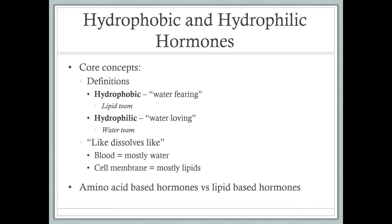This applies to our body because blood is mostly water — think water team. And the cell membrane, the plasma membrane, is mostly lipid — it is a phospholipid bilayer — so think lipid team. At their most simple, hormones are either amino acid-based or lipid-based. Your book will talk about amino acid, peptide, and protein-based hormones, and lipid, cholesterol, steroid-based hormones. But at the most simple, we have amino acid-based hormones and lipid-based hormones.